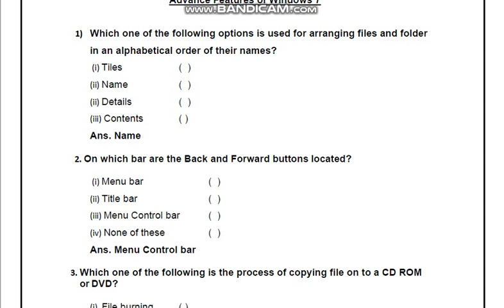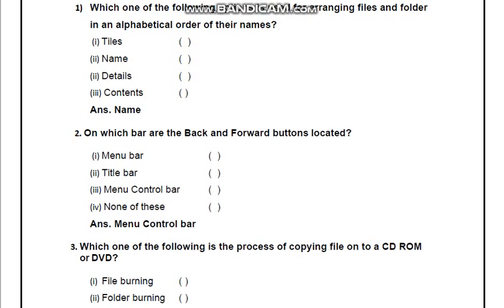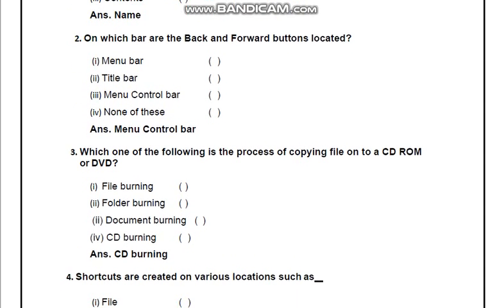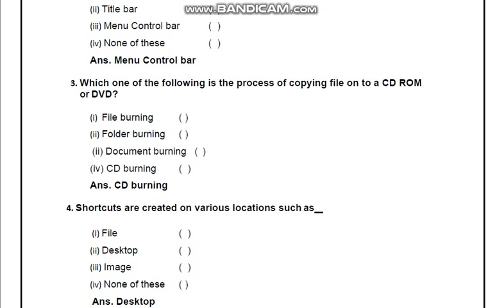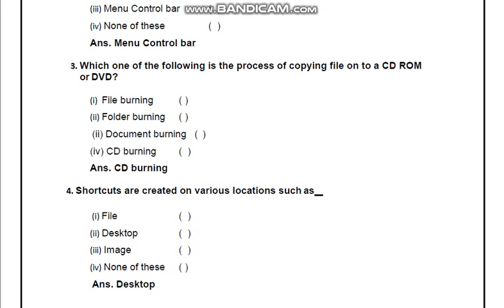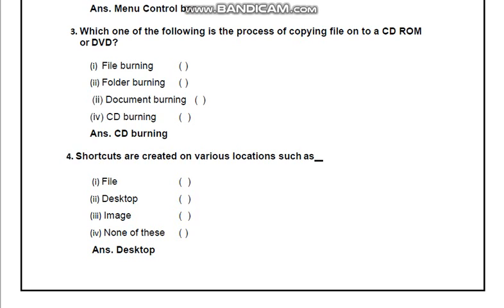Which one of the following is the process of copying files onto a CD-ROM or DVD? Kis process ke help se hum CD-ROM ya DVD me file ki copy kar sakte hain? Options: File burning, Folder burning, Document burning, CD burning. Answer humara CD burning.